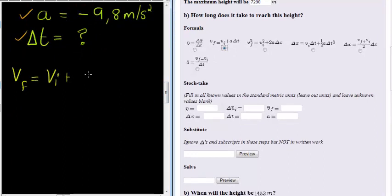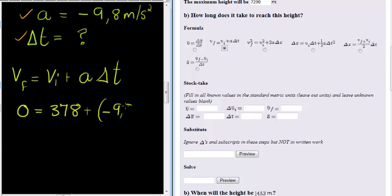Doesn't matter, any one of those two. So writing it down, I've got future velocity is equal to initial velocity plus acceleration times Δt. Here future velocity I know is 0, initial velocity 378, acceleration negative 9.8, and Δt is what I want to go and calculate.